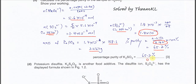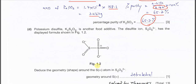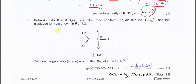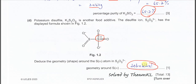Part D: potassium disulfite (K2S2O5) is a food additive. We have the disulfite ion as shown in figure 1.2. Deduce the geometry of the sulfur alpha atom. This sulfur has four electron clouds, therefore it must be tetrahedral. That's all for this question.